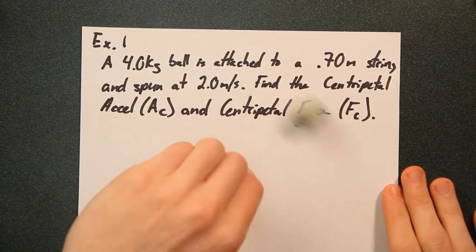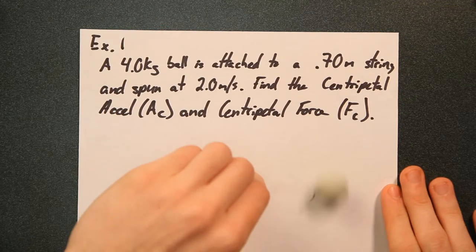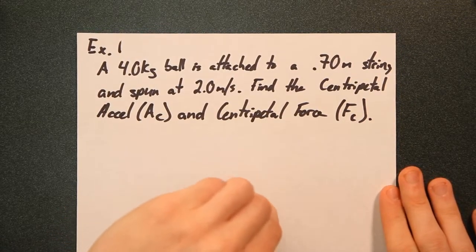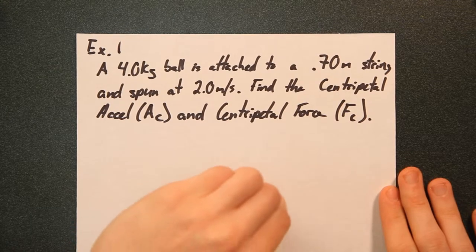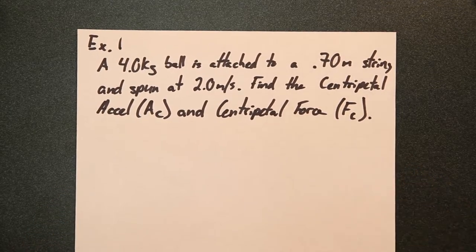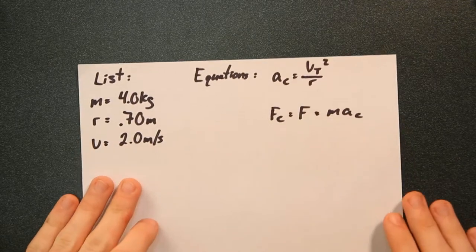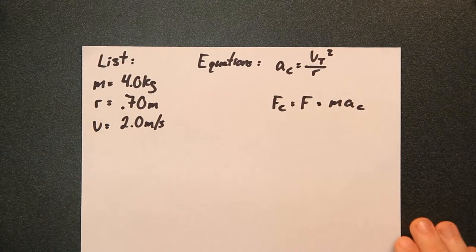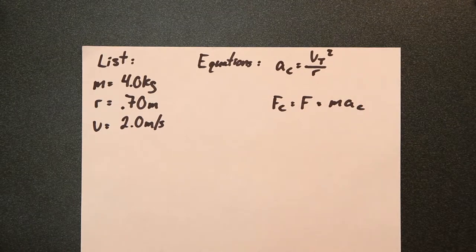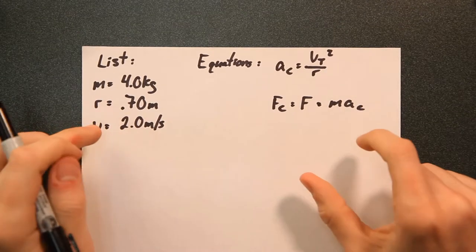So you can imagine you've got a ball here spinning at two meters per second. And we want to find that acceleration and the force. So we've already got our knowns here. So we've got our list. So like I said, we've got mass of four kilograms, 0.7 meters per string.